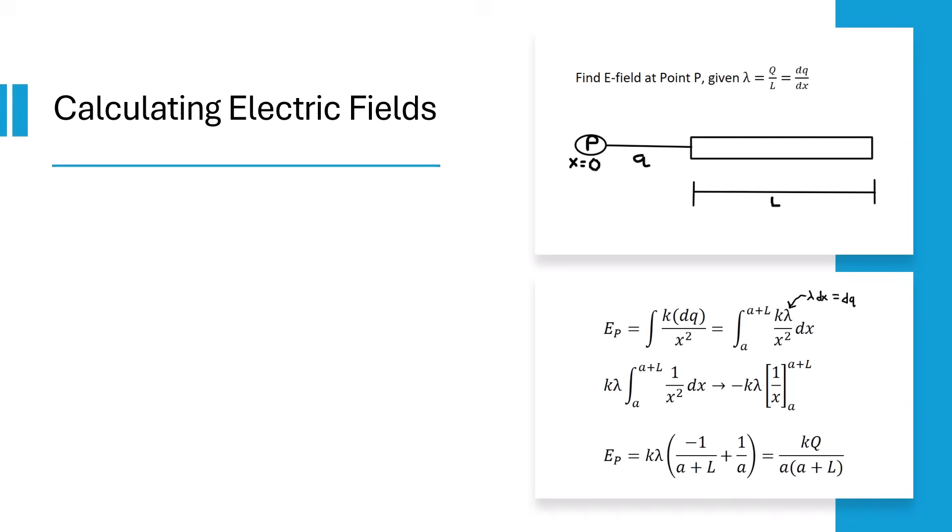Finding the E-field due to a point charge is easy. We just find kq over r squared, or if there are multiple point charges, we add all of the kq over r squareds.